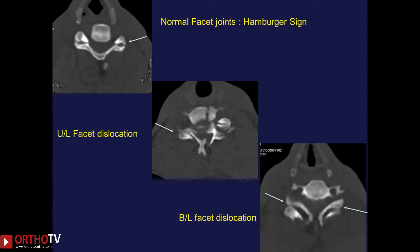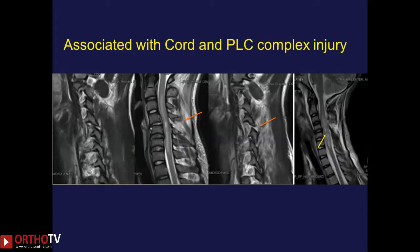Normally on the axial cut of a cervical subaxial vertebra, the facets look like a burger — called the hamburger sign. If there is a dislocation, the burger is reversed and it is called the reversed hamburger sign. In a bilateral facet dislocation, you will have a reversed hamburger sign on both sides. MRI should be done to look for any cord lesion; you can see contusion along with edema, or pick up subtle signs like tearing of the facet capsules.